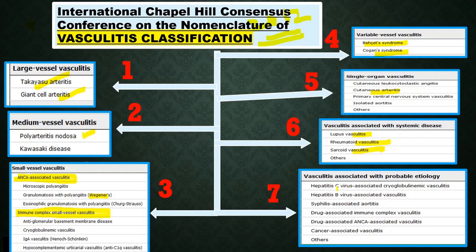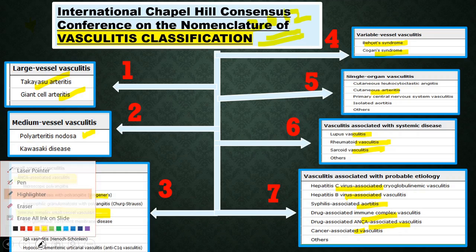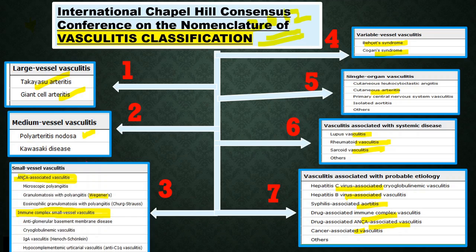The last one is vasculitis associated with probable etiology — those associated with hepatitis C-induced cryoglobulin vasculitis, hepatitis B, syphilis-associated vasculitis, drug-induced and drug-associated vasculitis, and cancer-associated vasculitis. So these are all the newer classification systems for vasculitis based on the 2012 Chapel Hill criteria — total seven categories.